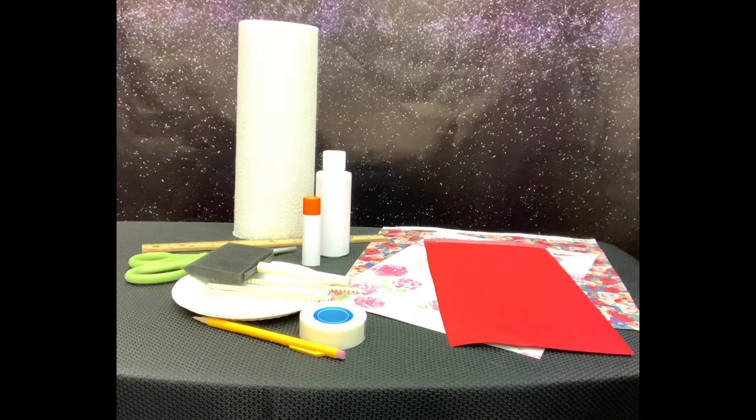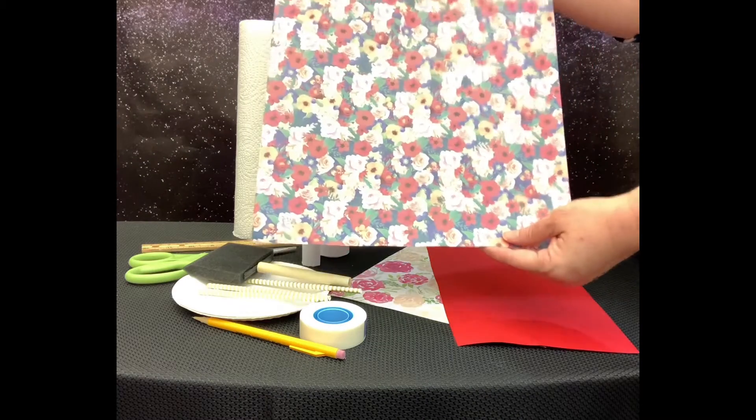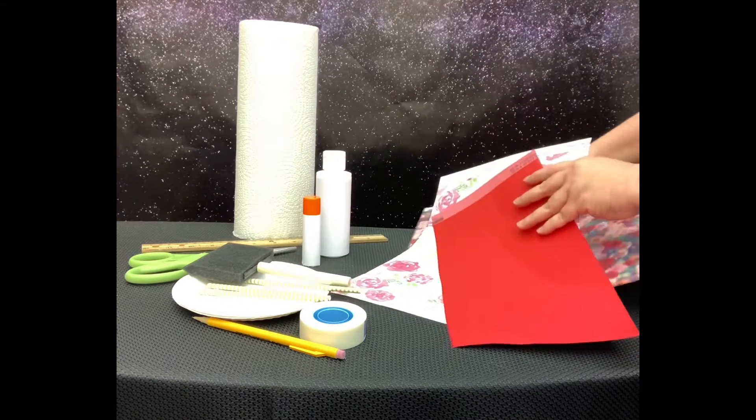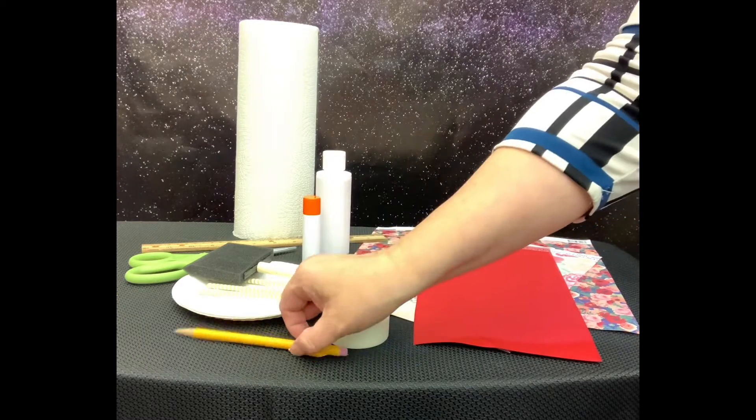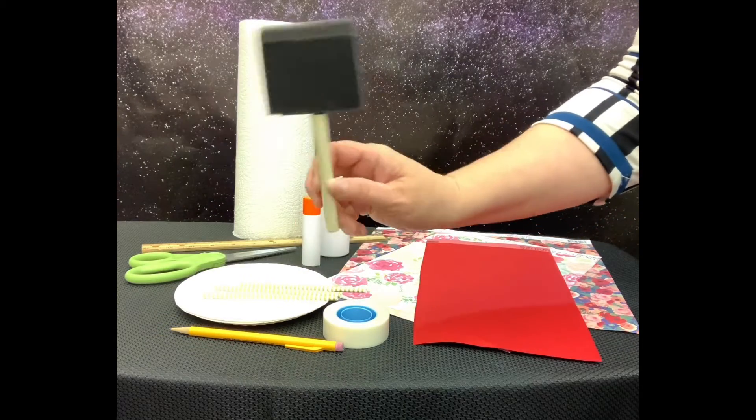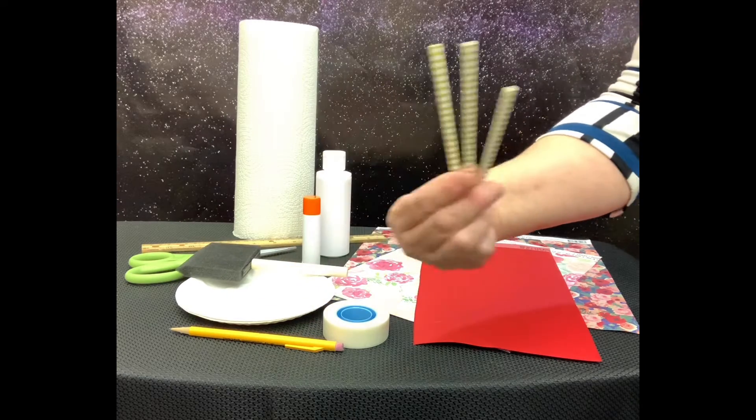First we're going to need some supplies including some scrapbook paper, they're often sold in 12 by 12 inch sheets, some tape, a pencil, a sponge brush, paper plates, and some cocktail straws.